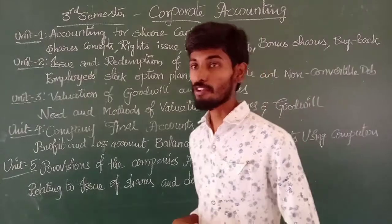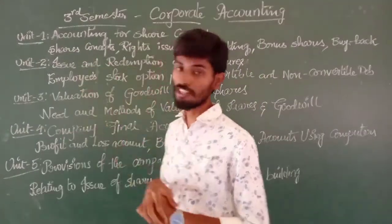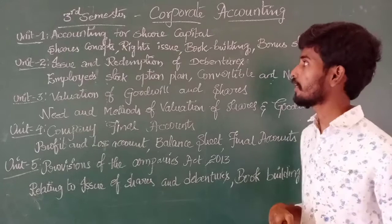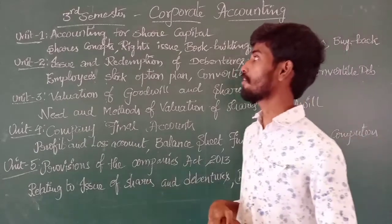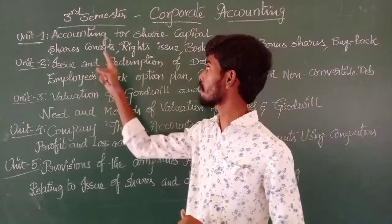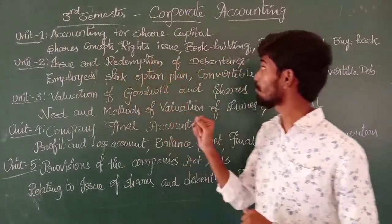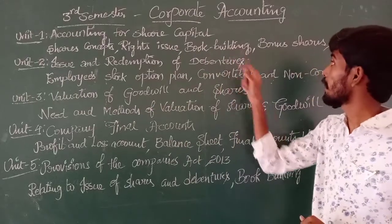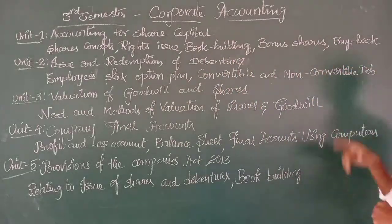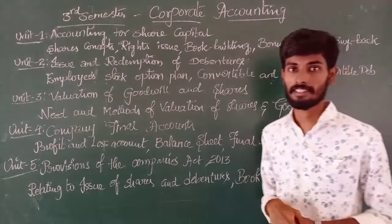Let's see those five units. First unit: Accounting for Share Capital. In this unit, I have to cover the share concept, rights issue, book building process, and bonus shares.